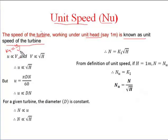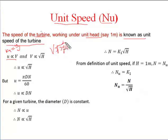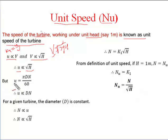From this equation, u is directly proportional to v. We also know that v is equal to √(2gH). From this equation, v is directly proportional to √(2H), which means v is directly proportional to √H.